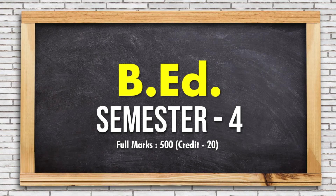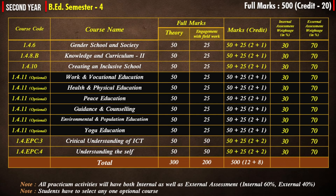In B.Ed Semester 4, you have to read six courses. Course 1.4.6 is Gender, School and Society. Course 1.4.8B is Knowledge and Curriculum 2. Course 1.4.10 is Creating an Inclusive School. Course 1.4.11 is optional - students choose any one from: Work and Vocational Education, Health and Physical Education, Peace Education, Guidance and Counseling, Environmental and Population Education, or Yoga Education. EPC 3 is Critical Understanding of ICT and EPC 4 is Understanding the Self.